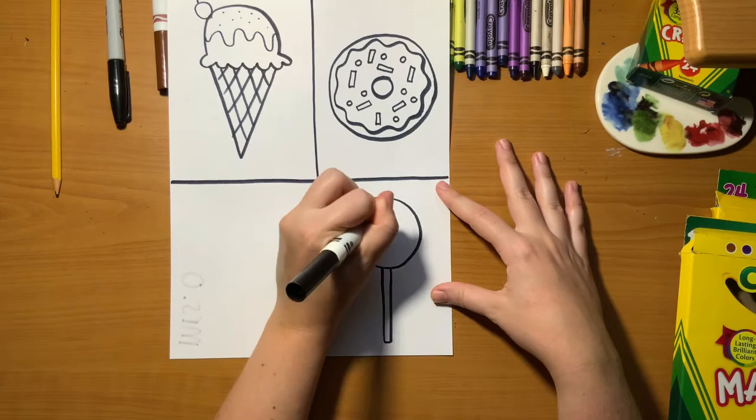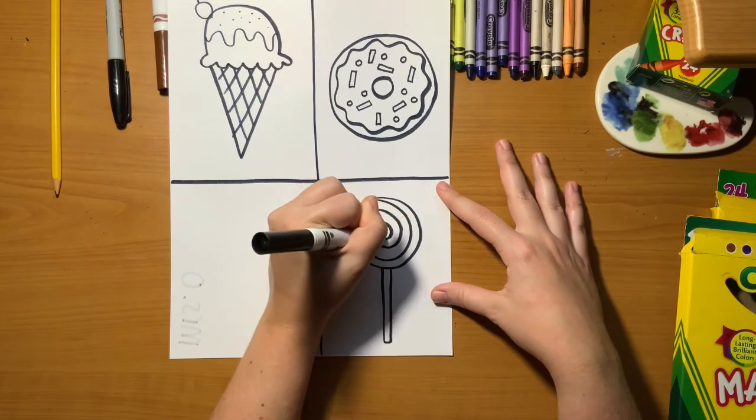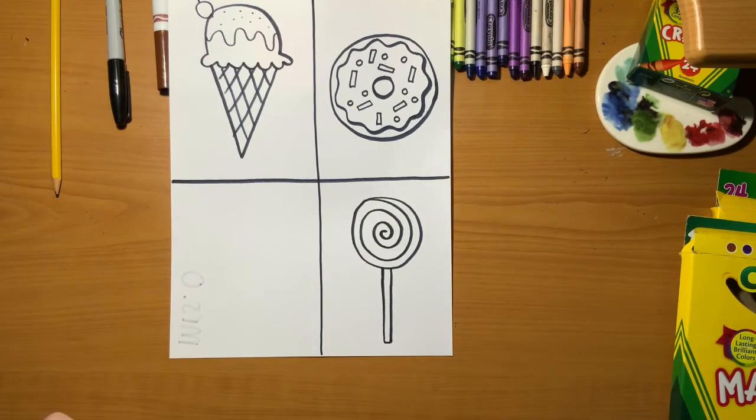If you want inside your lollipop, you can make a swirl line going around and around and around until you get to the middle. This will give you a spiral or a swirl in the middle of your lollipop.